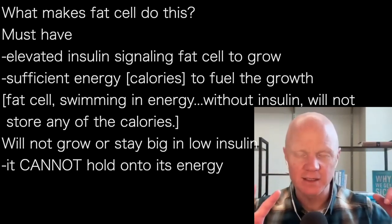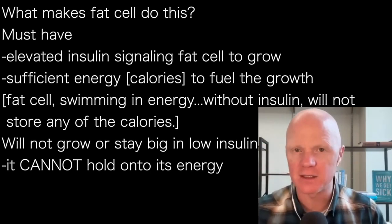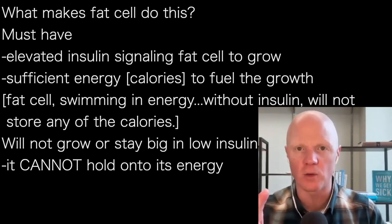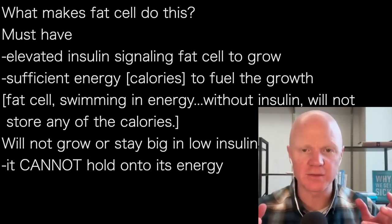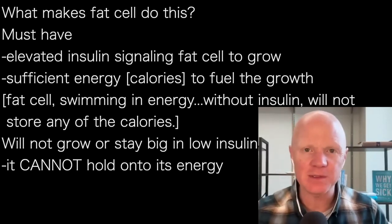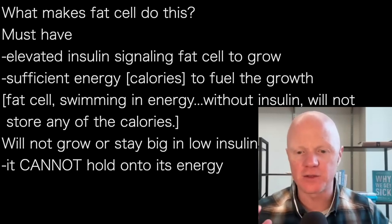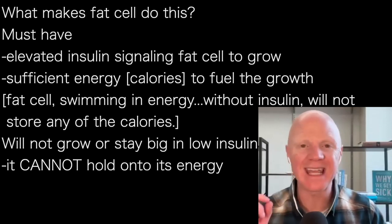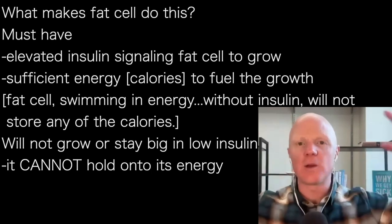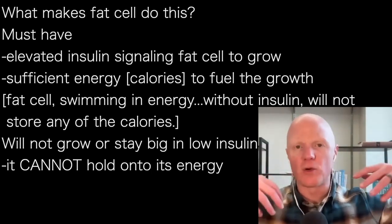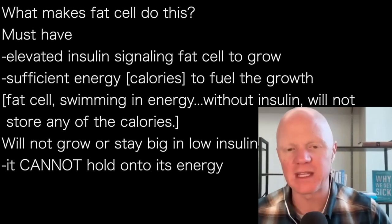What makes the fat cell get big? There are two essential elements — you cannot have one without the other. You must have an elevated insulin level to signal to the fat cell that it needs to grow, and you must have sufficient energy or enough calories available to fuel that growth. A fat cell swimming in a sea of calories in the absence of insulin will not store any of those calories. It is physically impossible for a fat cell to not only grow but even stay big if insulin is low — it cannot hold on to its energy. So you need an insulin stimulus and sufficient energy to fuel that stimulus to grow, resulting in a hypertrophic fat cell and this creeping, insidious version of insulin resistance settling in over time.